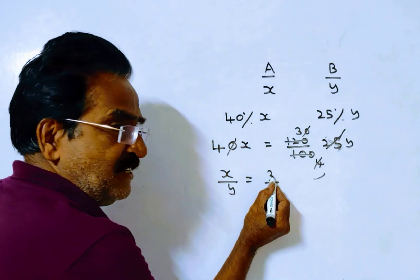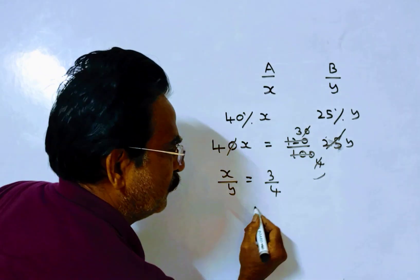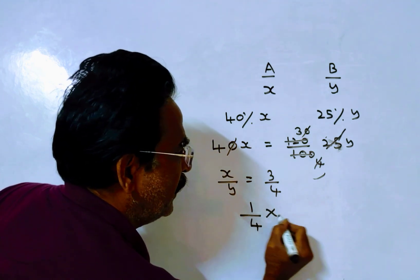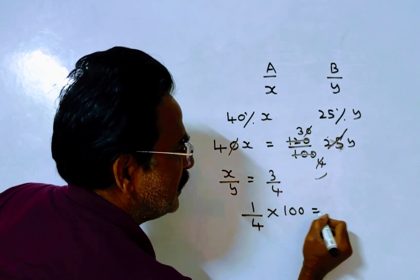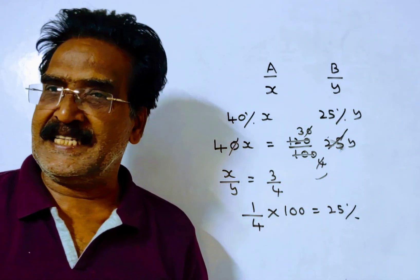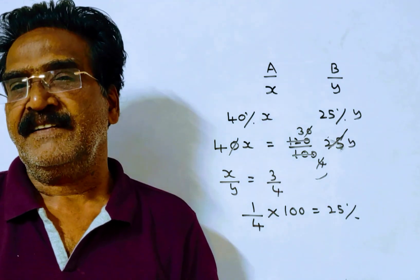See friends, this is 1 less than 4. So percent means 1 upon 4 into 100, that is equal to 25%. So A's income is 25% less than B's income. Thank you.